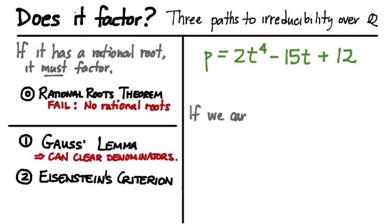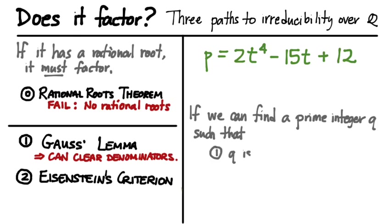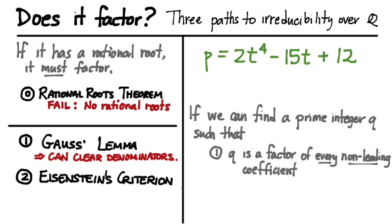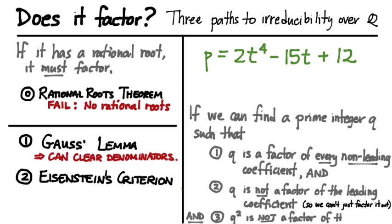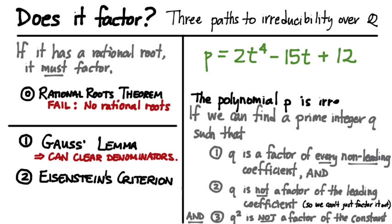Here's Eisenstein's Criterion in its generality. If we can find a prime integer q such that: first, q is a factor of every one of the non-leading coefficients — everything but the leading coefficient; second, q is not a factor of the leading coefficient, because if it were we could just factor it out; and third, q squared is not a factor of the constant term of that polynomial — if we can find a single prime satisfying all three conditions, then Eisenstein's Criterion says p is irreducible over Q.